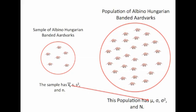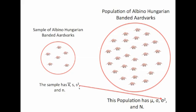Now we might use X-bar from the sample to predict mu. We might use S in the sample to predict sigma. And of course if S predicts sigma, then S-squared predicts sigma-squared. But N, the number in the sample, will have bearing upon all of the predictions that we make about the population.